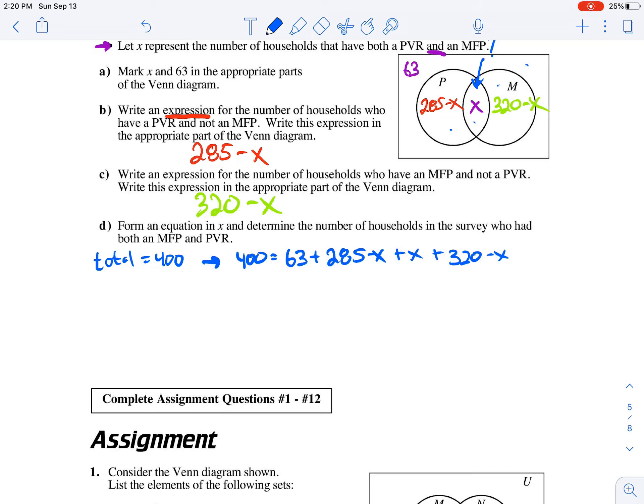We will put like terms together and then eventually get X by itself. Negative X plus X cancels out. Over here we have 400. If we put the 63, the 285, and the 320 together, we end up with 668 minus X. I'll move X over here, move the 400 to the left-hand side, and we figure out that X equals 268. So what we found is that 268 households have both.